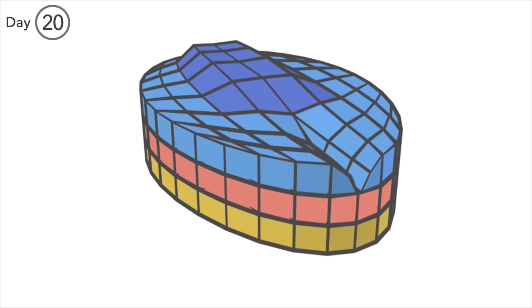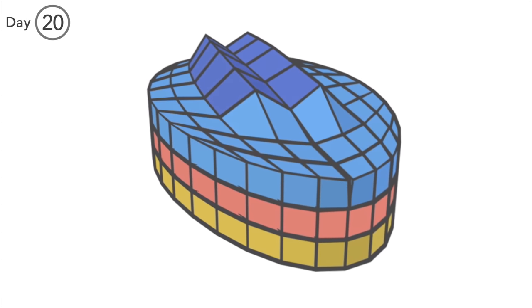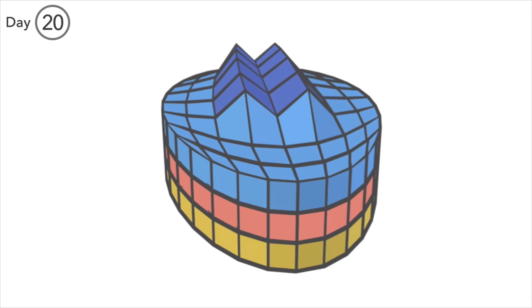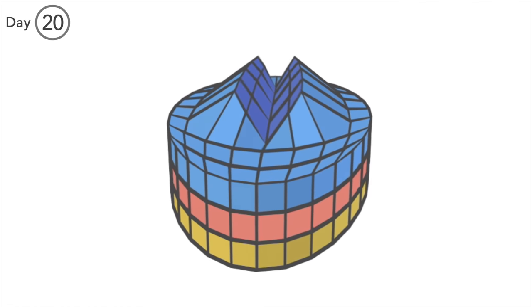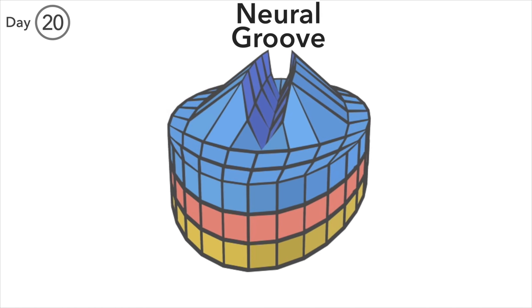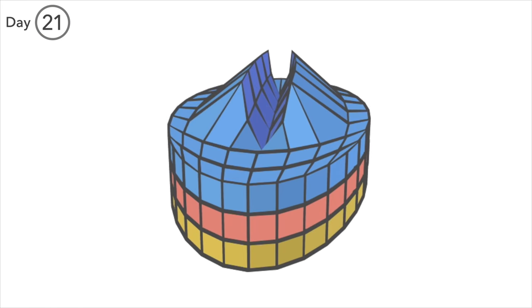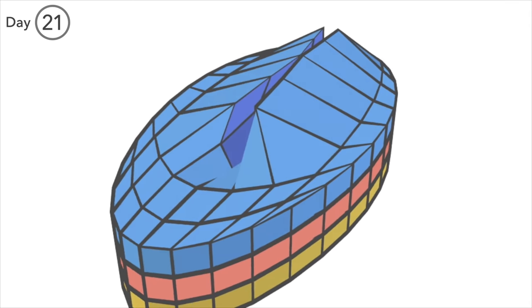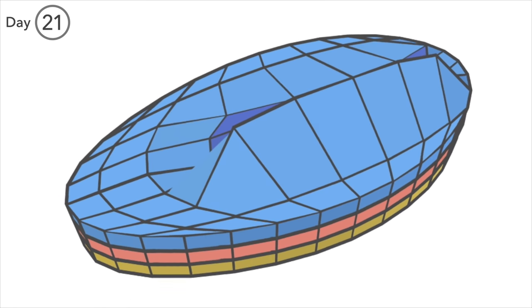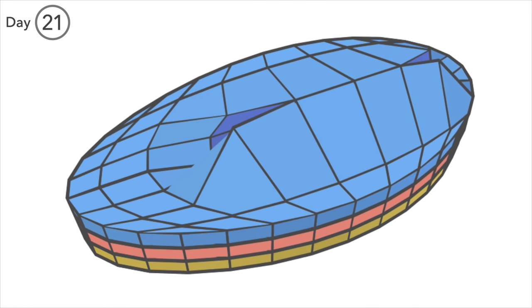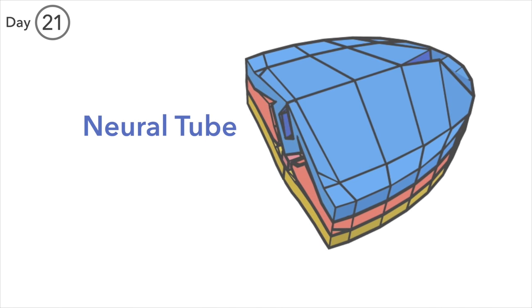Day 20. The neural plate has begun buckling in the midline. We call this dip the neural groove and the mounds either side the neural folds. Day 21. These folds progress toward each other and begin to fuse in the centre around day 21. Where they are fused they form a hollow cylinder underneath which is the neural tube. The very beginning of the central nervous system.